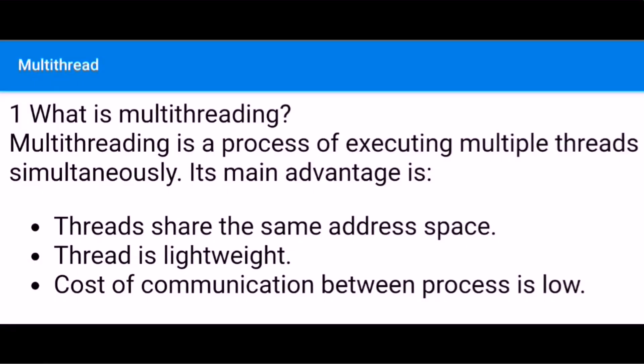What is multithreading? Multithreading is a process of executing multiple threads simultaneously. Its main advantages are: threads share the same address space, a thread is lightweight, and the cost of communication between processes is low.